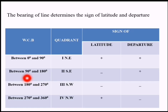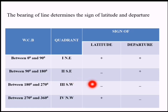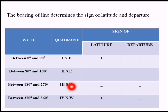If the whole circle bearing is between 180 and 270 degrees, the line will be in the south-west quadrant and both the sign of latitude and departure are negative. For the fourth quadrant from 270 to 360 degrees, that is the north-west quadrant, latitude is positive and departure is negative.